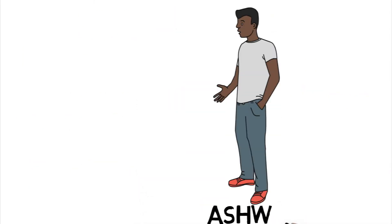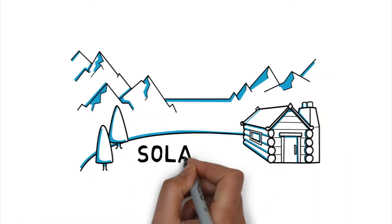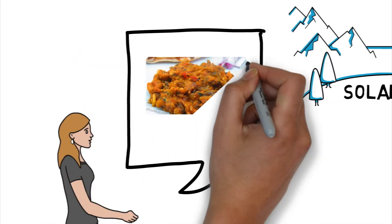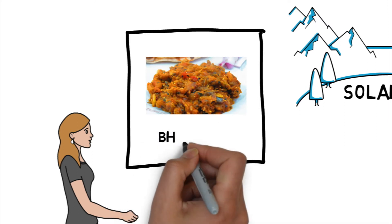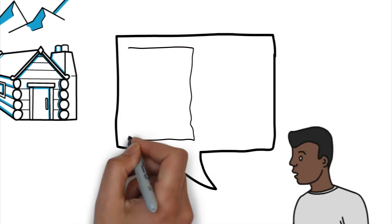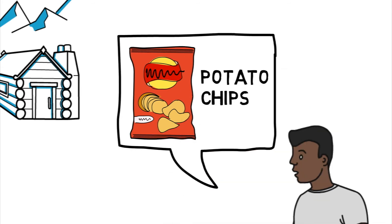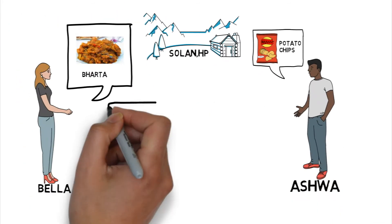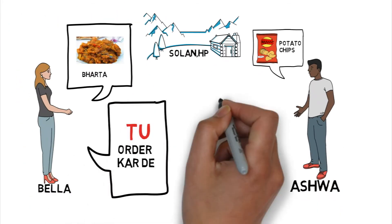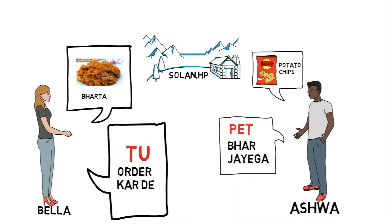Bela and Ashwa have gone to Solan. Bela said that I have to eat bread. Ashwa said that I will eat potato chips. Bela said to order. Ashwa said that the bread will be filling.